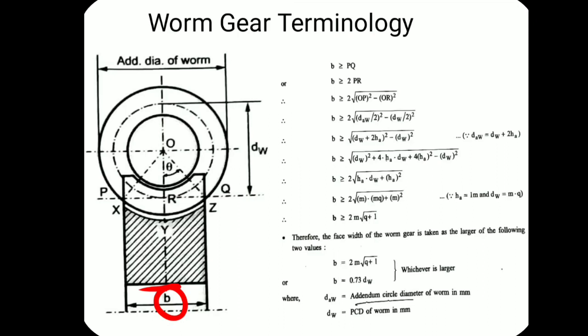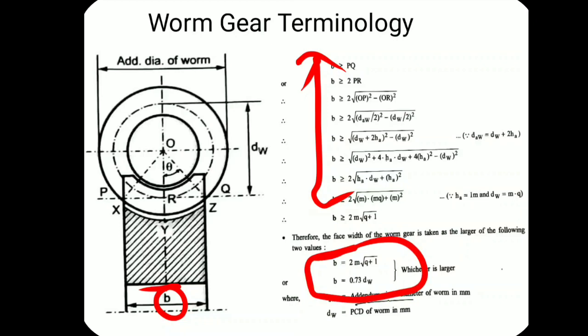That's why the face width formula is different. If you know it, fine; if not, no problem — it will not be asked for derivation. The important formula is: face width b = 2m × √(q + 1), or b = 0.73 × dw (diameter of worm). You need to calculate both and select whichever is larger. This is the face width terminology.